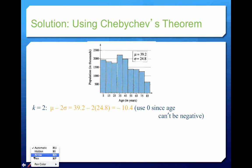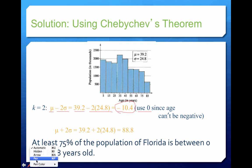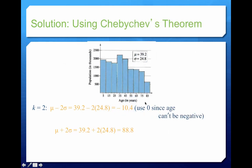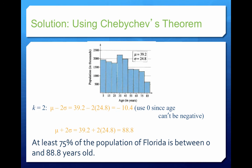Two standard deviations from the mean: I take my mean and subtract two standard deviations. So 39.2 minus two times 24.8 gives me negative 10.4. Can that be an age? No. So we'll say the lower bound is just zero — newborns. For the upper bound, we take 39.2 and add two times 24.8, giving us 88.8. Now we're within two standard deviations of the mean, which gives us 75% of our data. So 75% of Florida's population is between zero and 88.8 years old.